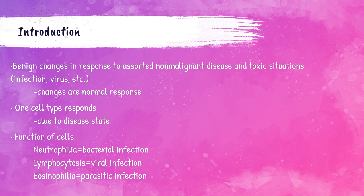Usually in a non-malignant infection or virus, one cell type is going to respond, and that can give us a clue to the patient's disease state. For example, when a patient has an increase of neutrophils, it is referred to as neutrophilia, and usually indicates a bacterial infection. When a patient has an increase of lymphocytes, it's referred to as lymphocytosis, and usually indicates a viral infection. When there is an increase of eosinophils, it is called eosinophilia, and usually indicates a parasitic infection or allergy.